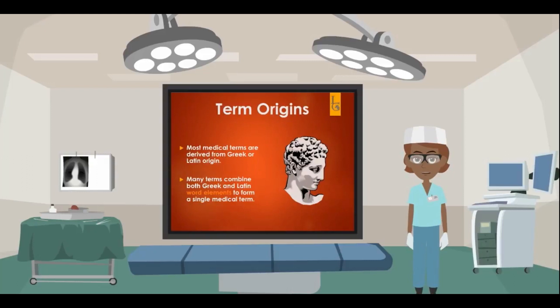Terms of Origin: Most medical terms are derived from Greek or Latin origin. Many terms combine both Greek and Latin word elements to form a single medical term. For example, the term claustrophobia means fear of enclosed spaces. The Latin word element is claustrum, meaning enclosed space, which is added to the Greek word element phobia, meaning fear, therefore giving you claustrophobia.